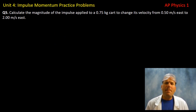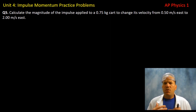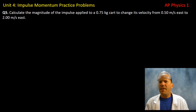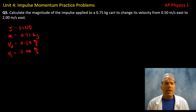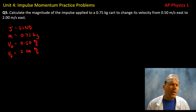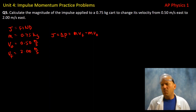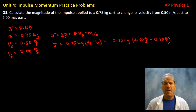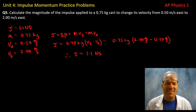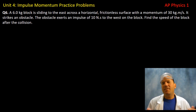Question five: calculate the magnitude of the impulse applied to a cart to change its velocity from 0.5 meters per second east to 2.00 meters per second east. Calling east positive, we want only the magnitude. Since impulse equals change in momentum, which equals mass times (v_final minus v_initial), and we're given mass plus initial and final velocities, we can solve for the impulse to be 1.1 newton-seconds.